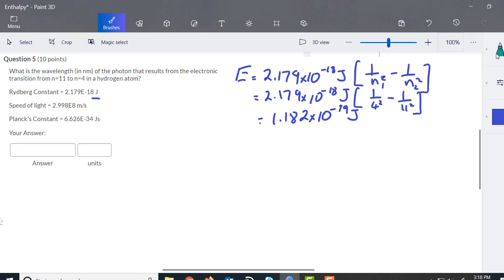The next thing we need to do is calculate the frequency, and for that we're going to use E equals H nu, and nu which is the frequency is going to be equal to E divided by H.